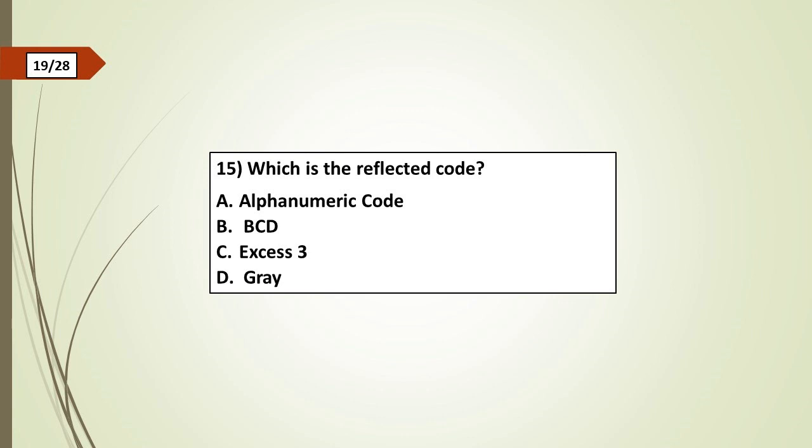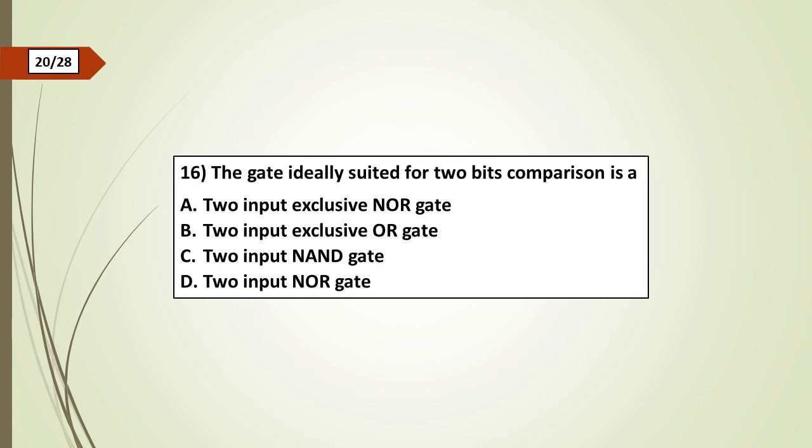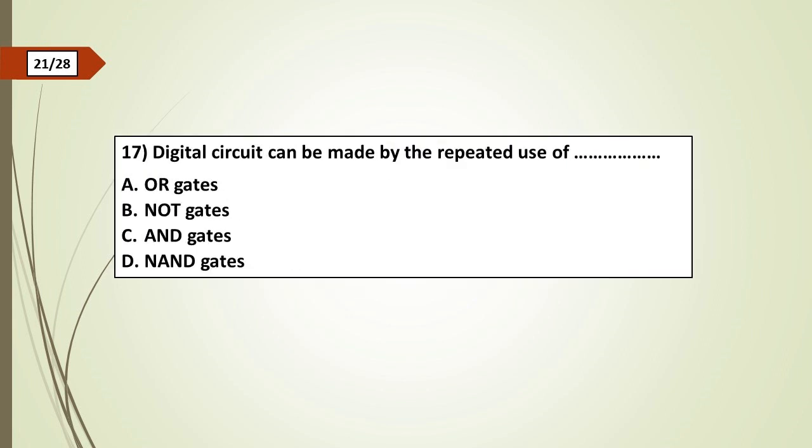Fifteenth question: Which is the reflected code? a) alphanumeric code, b) BCD, c) XS3, d) Gray. Sixteenth question: The gate ideally suited for two-bit comparison is: a) two input exclusive NOR gate, b) two input exclusive OR gate, c) two input NAND gate, d) two input NOR gate.